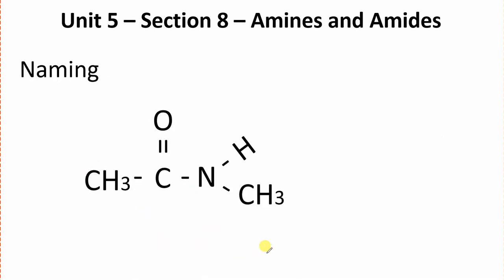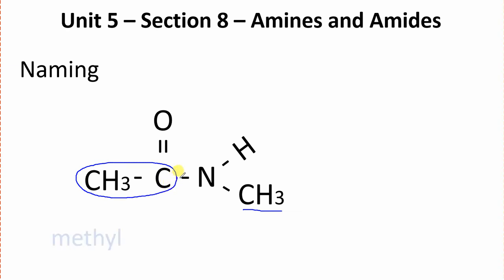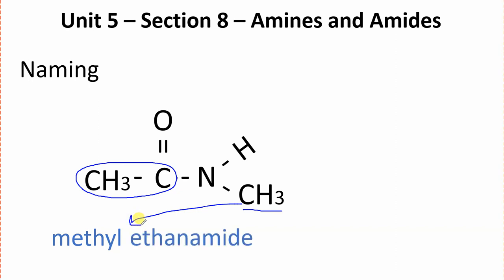They do get more complex, like this one here. Again, we'll identify this — we've got a methyl carbon chain. And over here, this will be our ending name; we've got two carbons for ethyl. So, methyl ethanamide. Again, the E for ethane is replaced with amide.